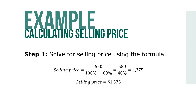Solve for the selling price using the formula. In this case, selling price equals 550 divided by (100% minus 60%), or 550 over 40%, which equals $1,375. So our selling price is $1,375.